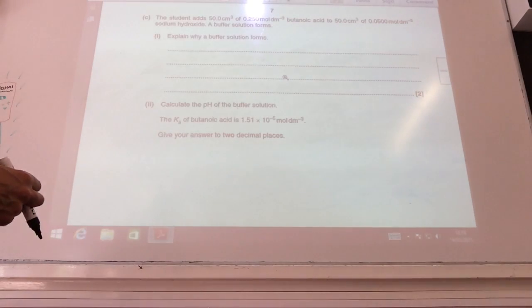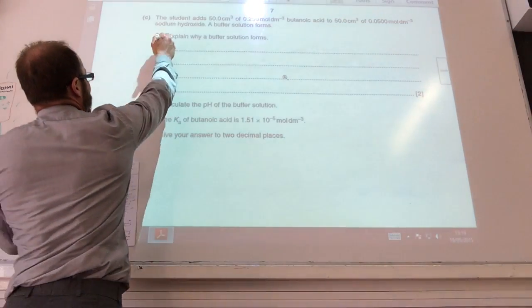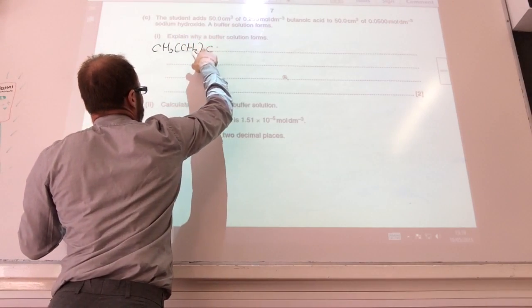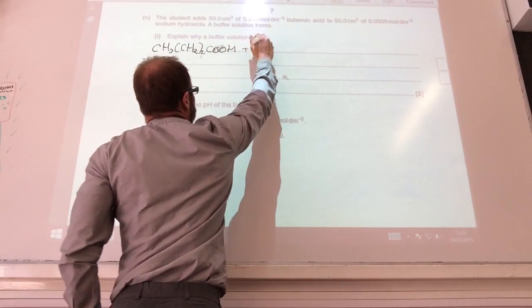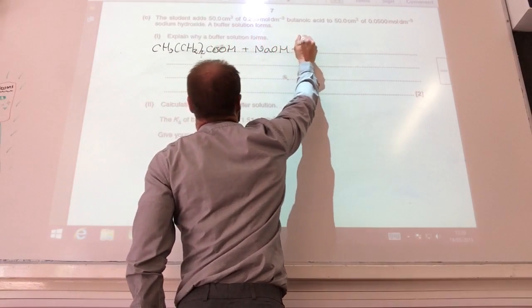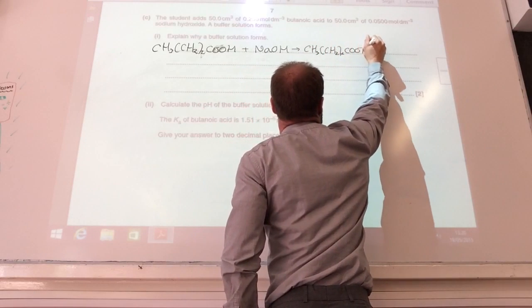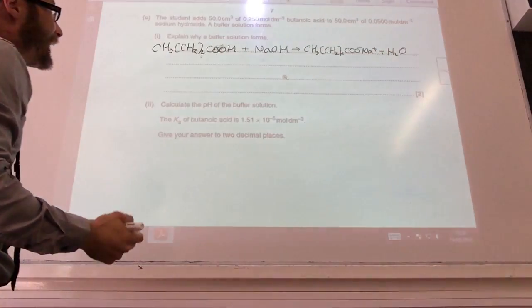Right, okay, so next one. A student adds 50 centimeters cubed of butanoic acid to sodium hydroxide. A buffer solution is formed. Why does a buffer solution form? Well, okay, you can do the equation if you want. You've got butanoic acid is going to react with sodium hydroxide to give you sodium butanoate plus water. So you've formed a salt of a weak acid.